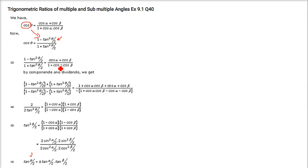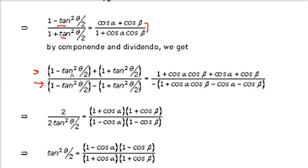After applying componendo-dividendo, tan²(θ/2) terms cancel on one side leaving 2, while 1s cancel on the other leaving −2 tan²(θ/2). On the right side, the numerator becomes (1 + cos α)(1 + cos β) and the denominator becomes −(1 − cos α)(1 − cos β), so the minus signs cancel.